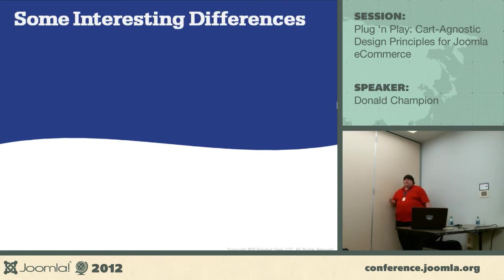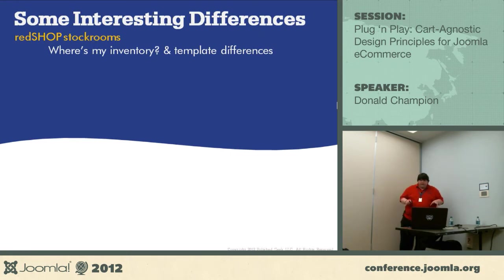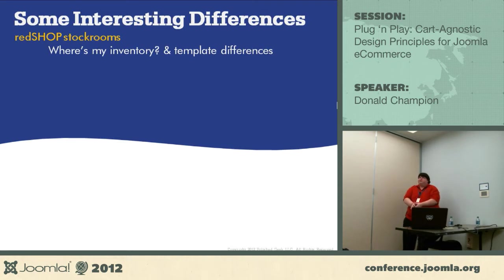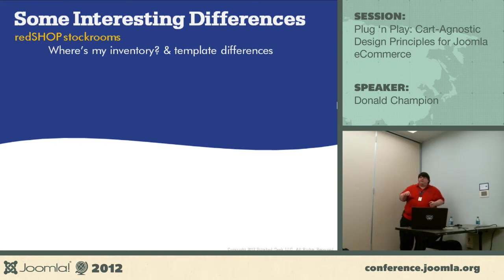Some interesting differences between the various carts: RedShop uses stock rooms. When we were actually developing JoomLister and had done a couple carts, we were coding along and starting to send stuff over to eBay, and when we got to RedShop we were like, where's the inventory? It's not in this table. We finally realized: oh, there are stock rooms. We had to recode a piece of JoomLister to actually select a stock room, because we can only send one quantity over to eBay and needed to know which stock room to pull from.